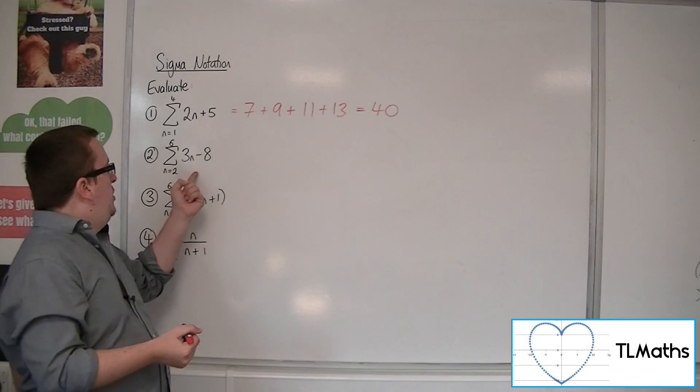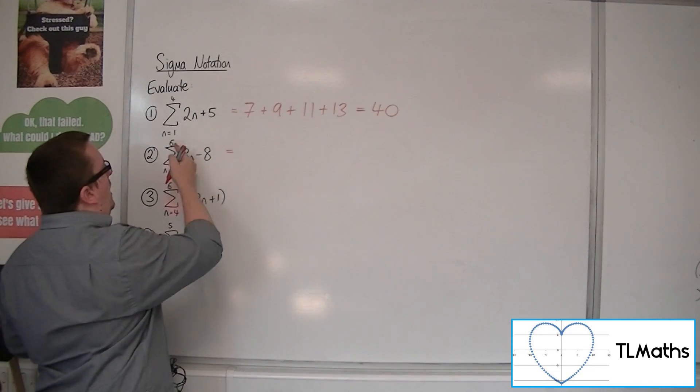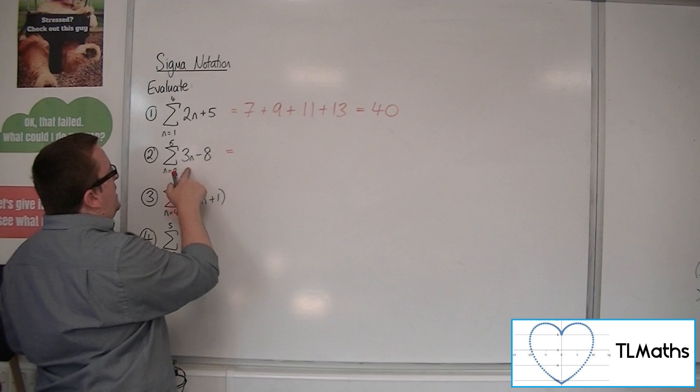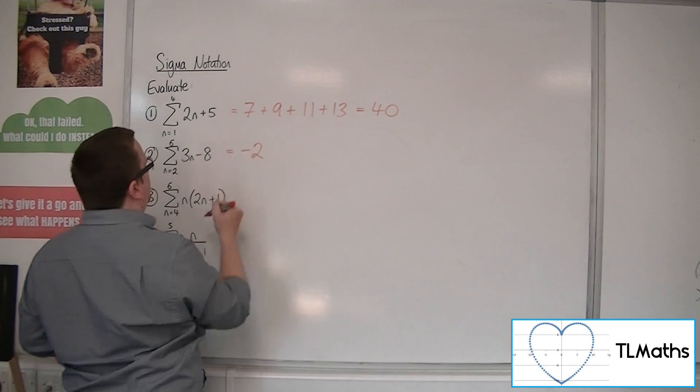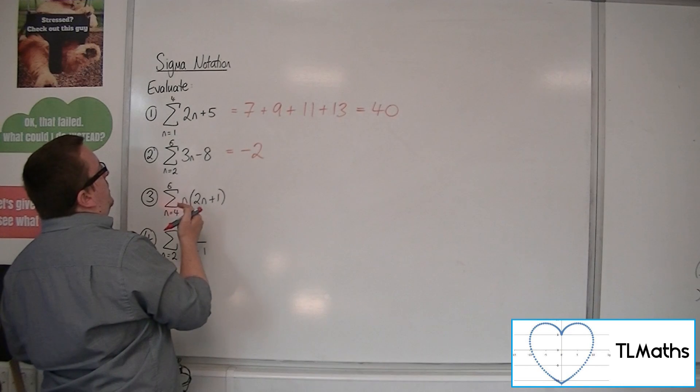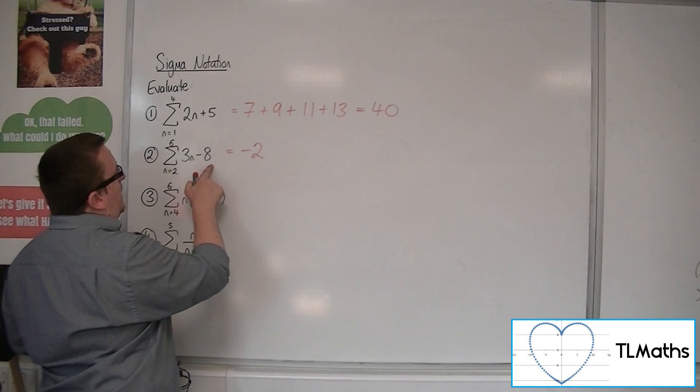Now for number 2, substituting in from 2 up to 6. So substituting in 2, we get 6 take away 8, so minus 2. Substituting in 3, we get 9 take away 8, so 1.